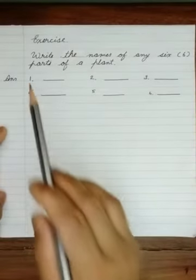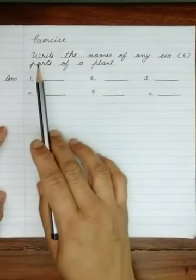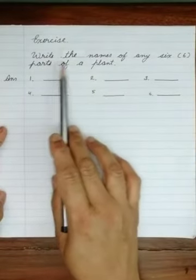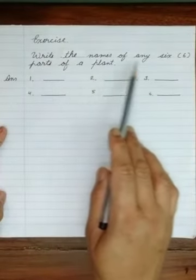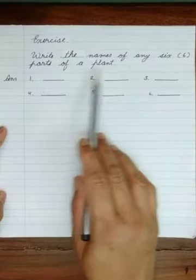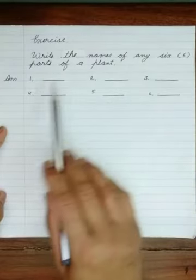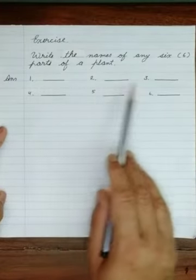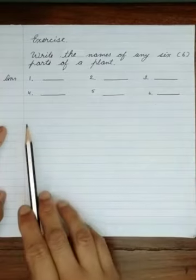Now exercise. Write the names of any six parts of a plant. Here you have to write the parts of a plant.